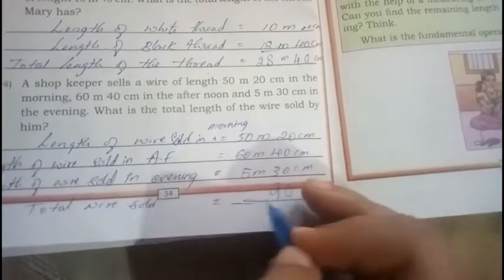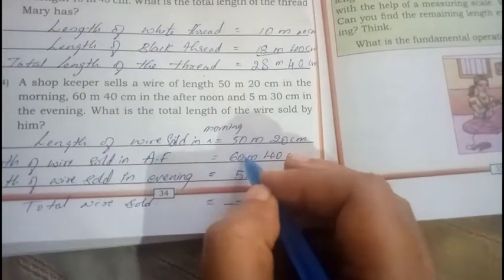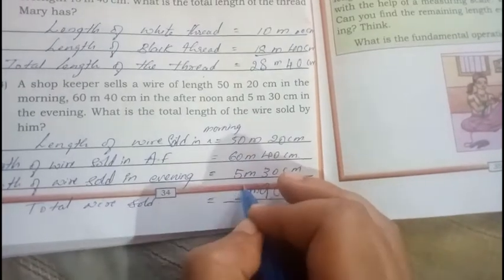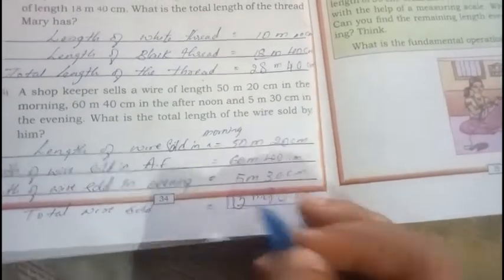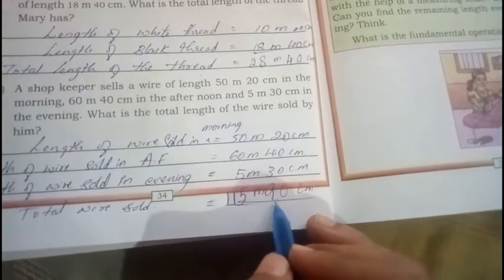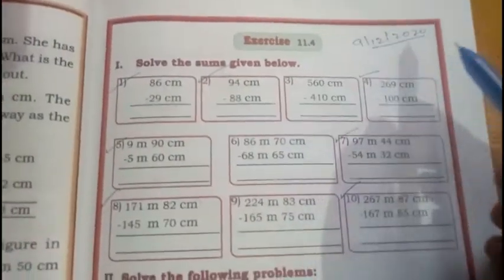Here centimeters, here centimeters, here meters. 0 plus 0, 0. 0 plus 5 is 5. 5 plus 6 is 11. Okay, like this. 115 M, 90 centimeters. Okay, next class will be on 9th of December. Then we'll meet, okay? Thank you, bye.